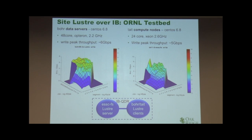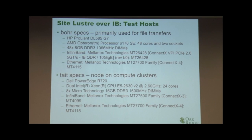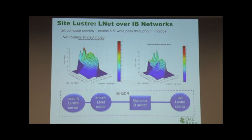We did a simple measurement: on my data server, the IO write gives me 6 gigabits per second, and on the compute node it gives slightly less. This is a regular native IB installation. These are the specifics of my test hosts — nothing particularly remarkable about them.